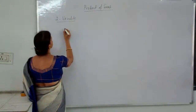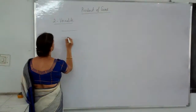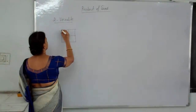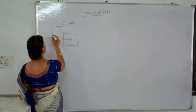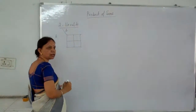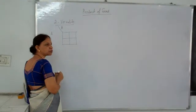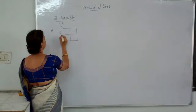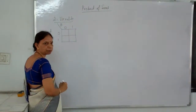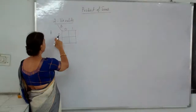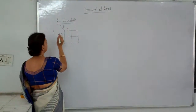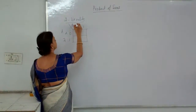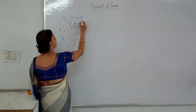We take 2 variables. Let's call this side A and this side B. When 2 variables are there, there are 4 possibilities. A can take 0 and 1. In the previous method, 0 was called A1; now we will call this A1 and this will be A-bar. This is B and this is B-bar.